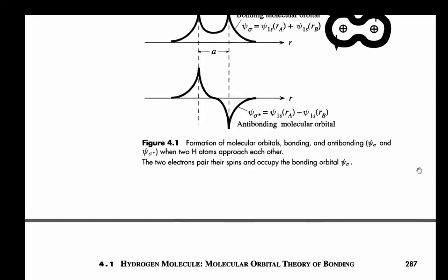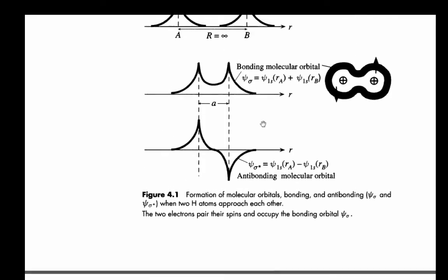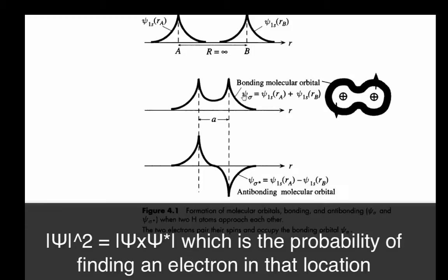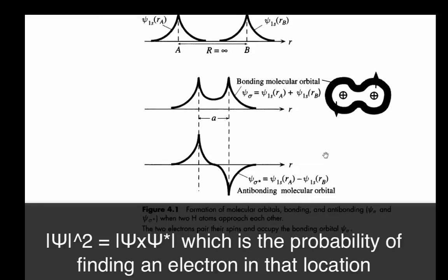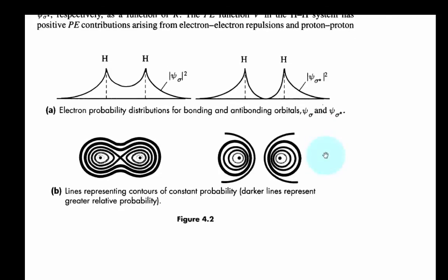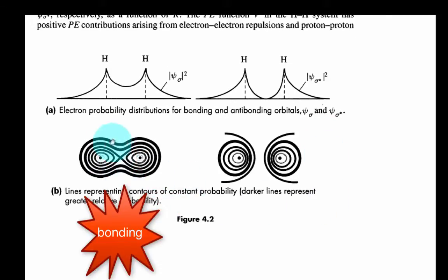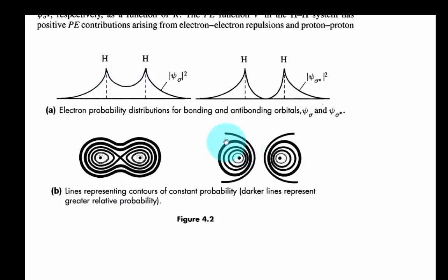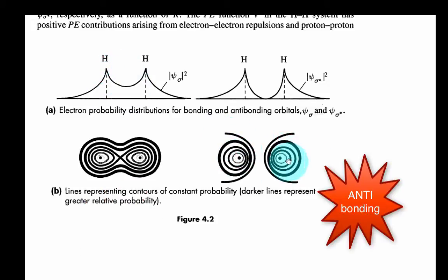Something that I'm assuming here that you know is that the square of this, or this times its complex conjugate, is equal to the probability of finding the electron there. Okay, so here's the picture that they show you is the bonding orbital here, the electron being located between the two atoms, and then the antibonding, the electron being away from the atoms.